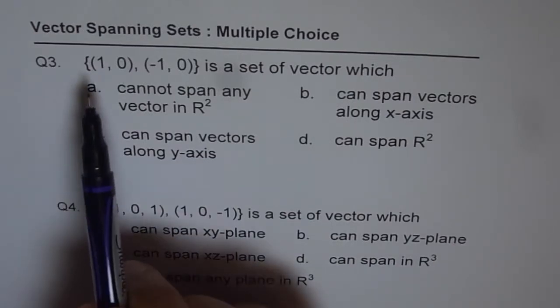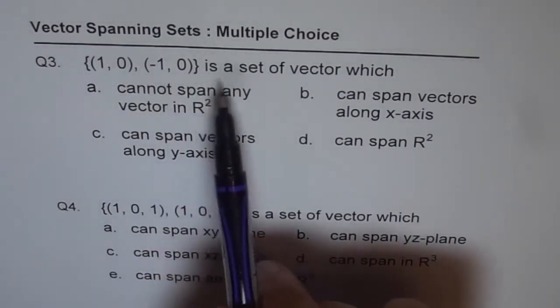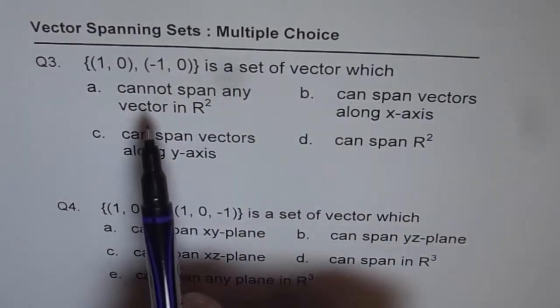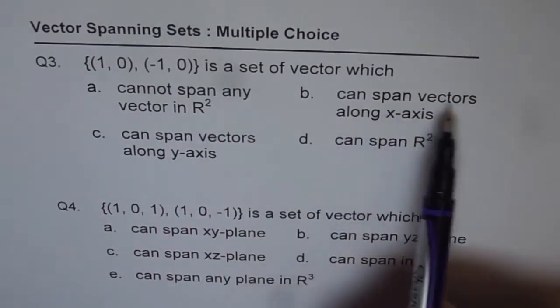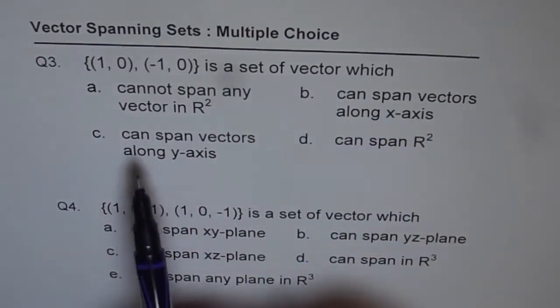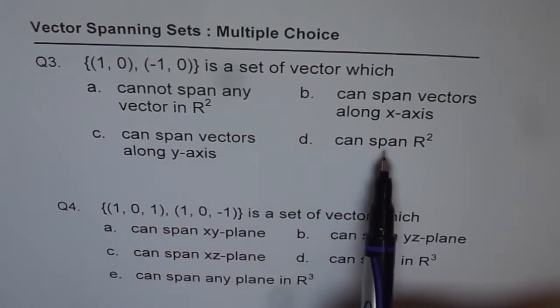Question number three: the set given to us is (1, 0) and (-1, 0). This is a set of vectors which: a) cannot span any vector in R², b) can span vectors along x-axis, c) can span vectors along y-axis, and d) can span R².